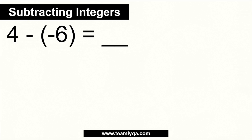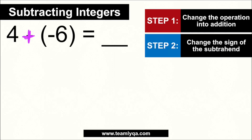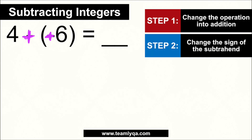Now, what if we have 4 minus negative 6? Step 1: change the operation into addition — so it becomes 4 plus. Step 2: change the sign of the subtrahend — negative 6 becomes positive 6. So now we have positive 4 plus positive 6. They have the same sign, so that is 10. Copy the sign — positive 10, or just 10.